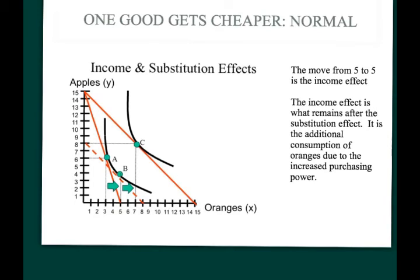What remains is the income effect. In this case, it's the move from point five to point seven. The income effect is what basically remains after the substitution effect—it's the additional consumption of oranges due to the increased purchasing power.